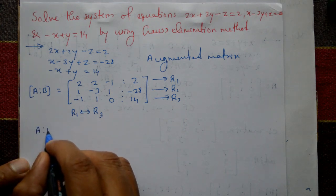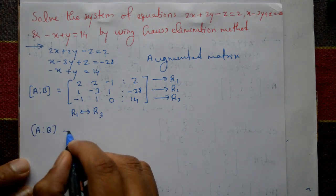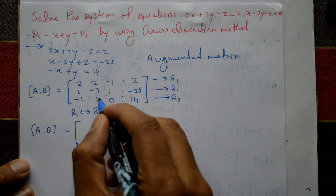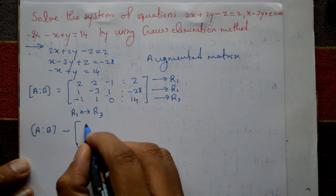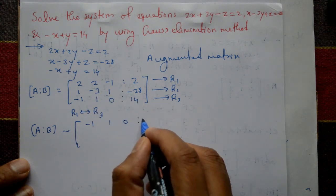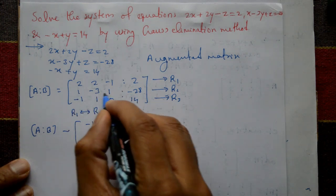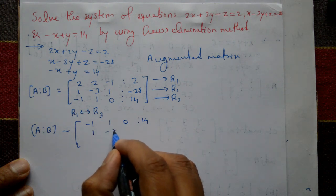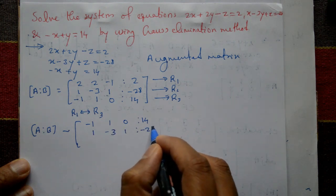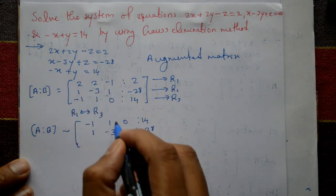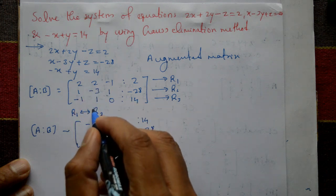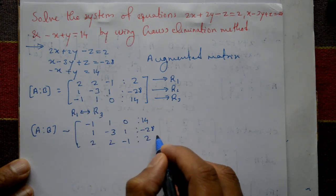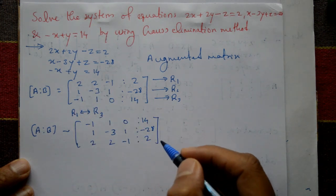After the interchange, the augmented matrix becomes: first row is minus 1, 1, 0, and 14; second row is unchanged — 1, minus 3, 1, minus 28; and the original first row comes third — 2, 2, minus 1, and 2.